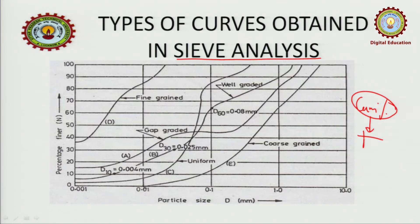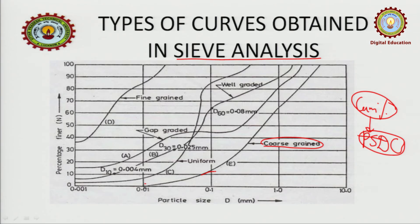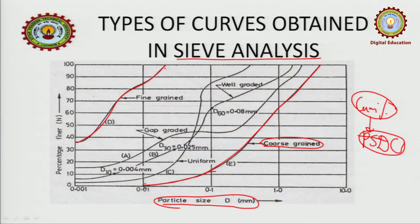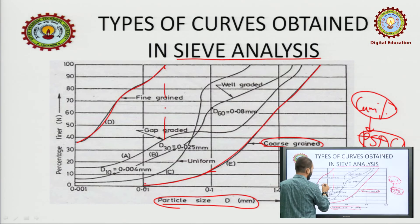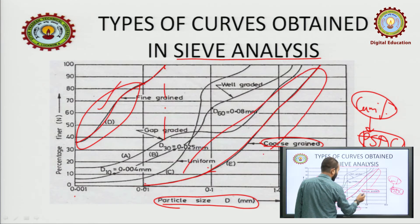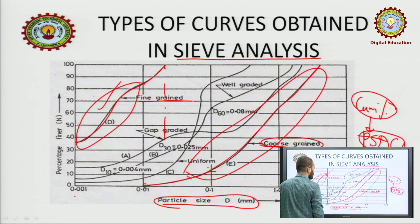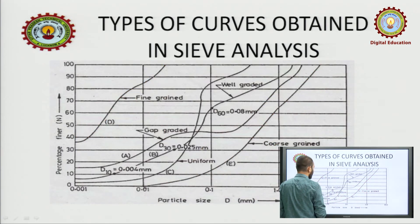We will be describing some basic terms and their concepts and physical meanings. Looking at the particle size distribution curve or sieve analysis — we have already seen them in detail. We also know how the cumulative percentages are found out and how the curve is made. In the field, the soil may be gap graded, well graded, or anything like that.